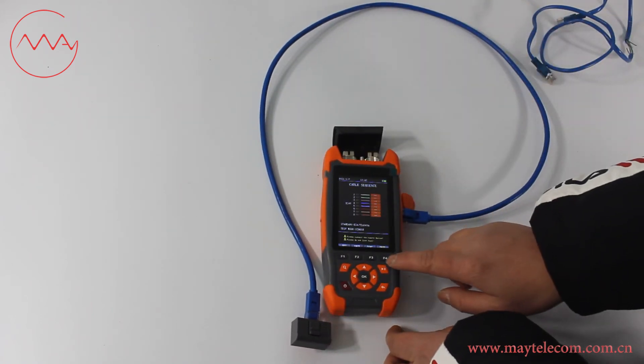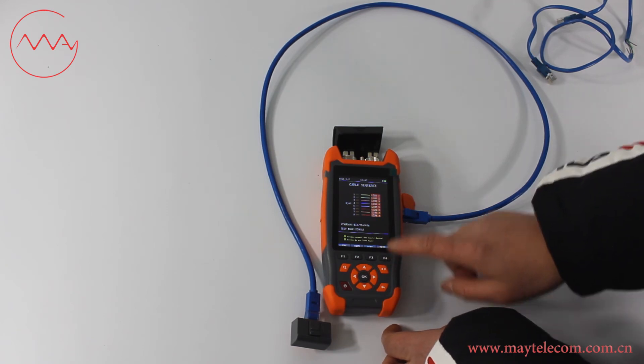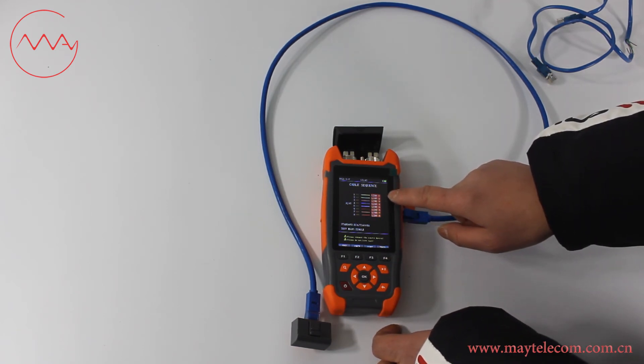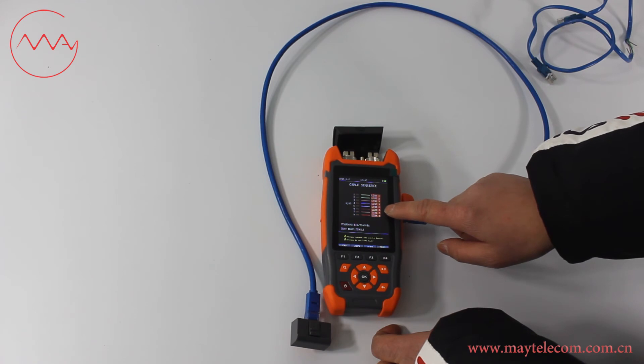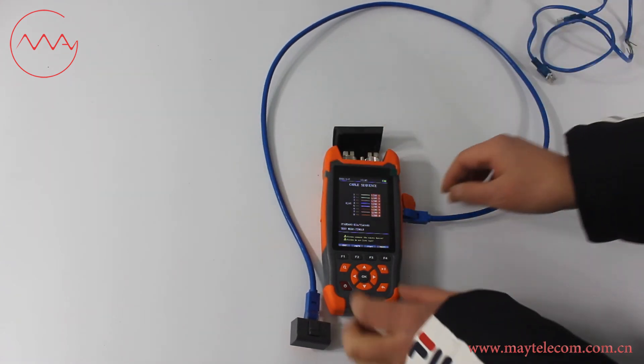Press F4 to start the test. We can see lines 1, 2, 3, 4, 5, 6, 7, and 8. All 8 wires in this cable are good.